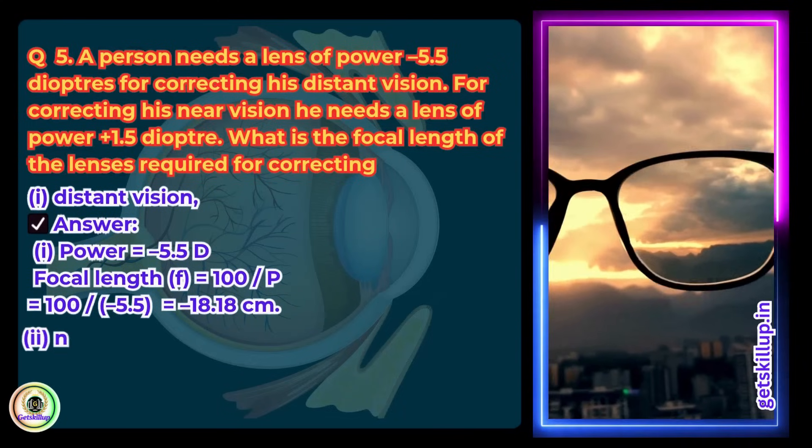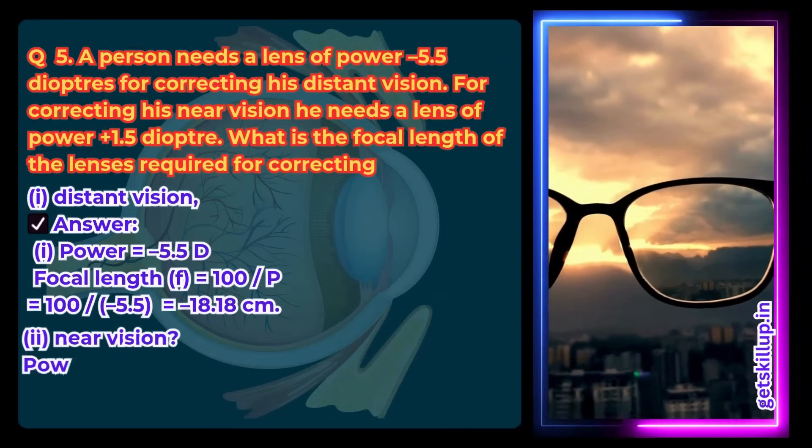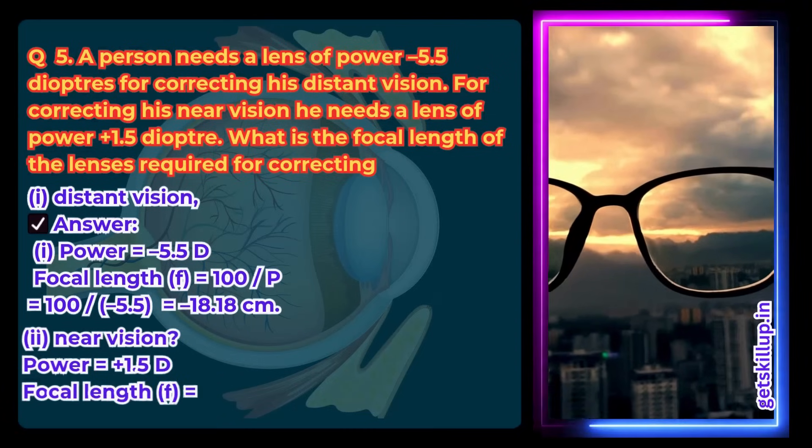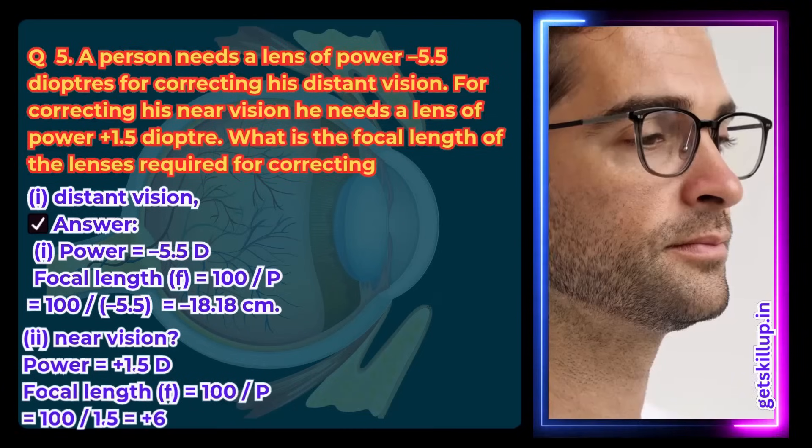For near vision, power equals plus 1.5 diopters. Focal length is equal to 100 divided by P, which is equal to 100 divided by 1.5, equals plus 66.67 cm.